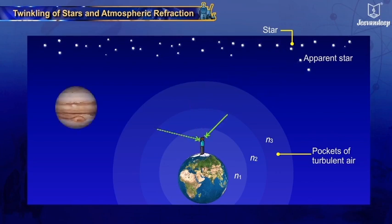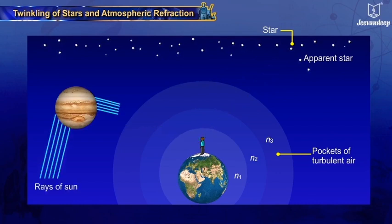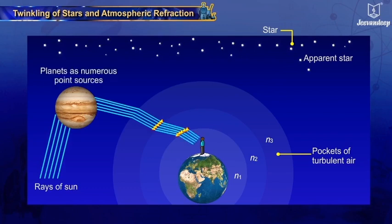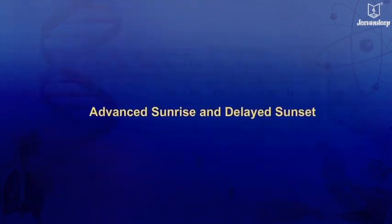Planets are relatively closer to the Earth and behave as extended sources — that is, a collection of numerous point sources of light. The net fluctuation in the intensity of light coming from a planet turns out to be zero. Hence, planets do not twinkle.